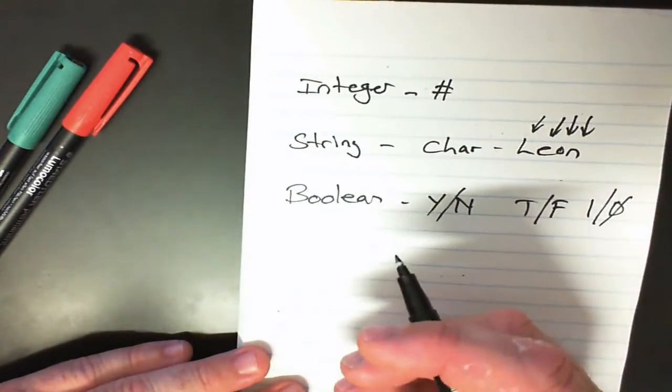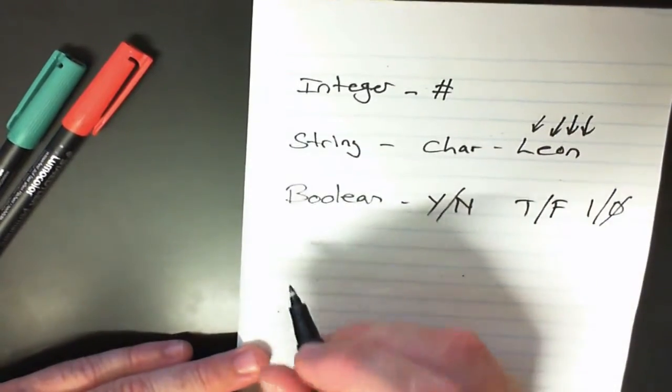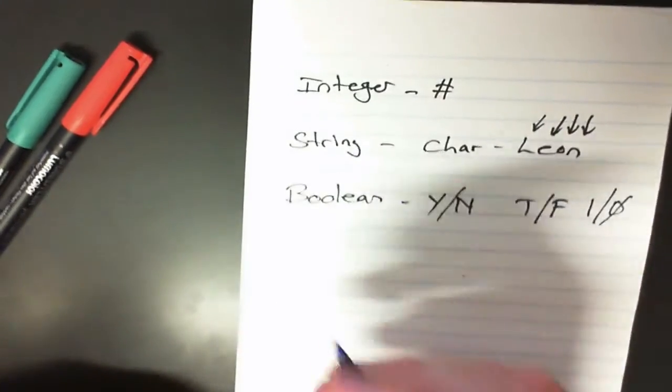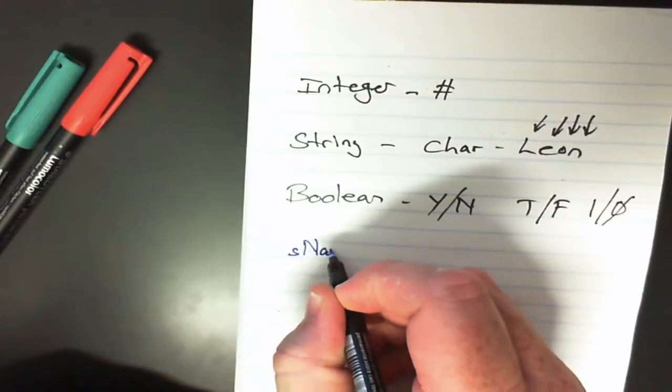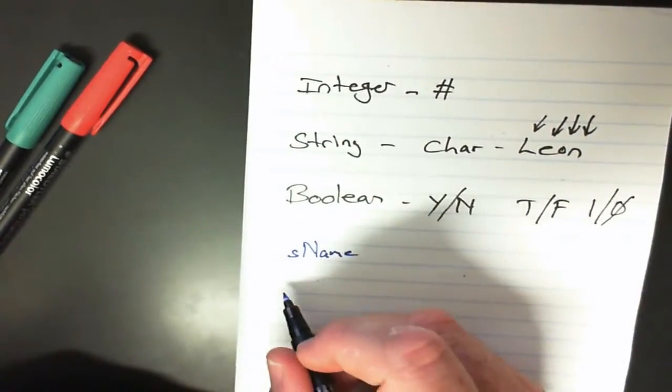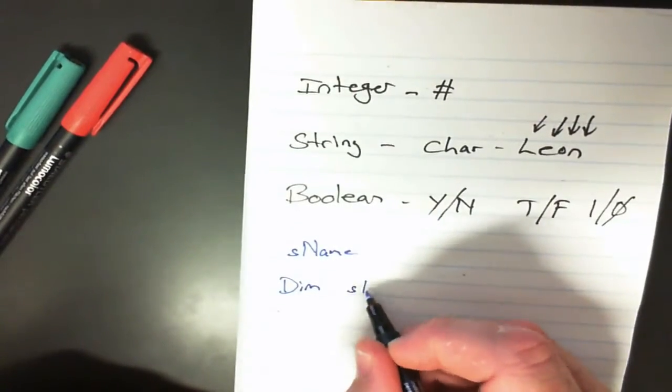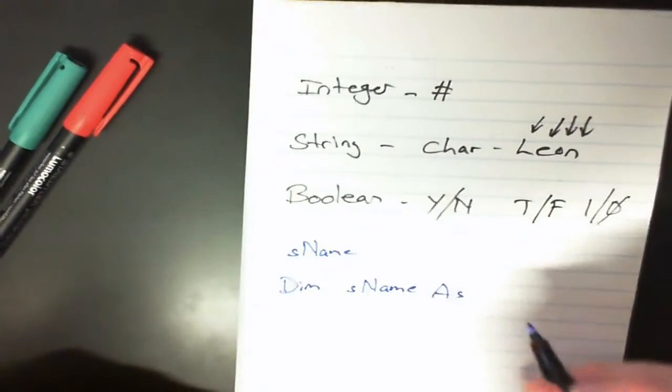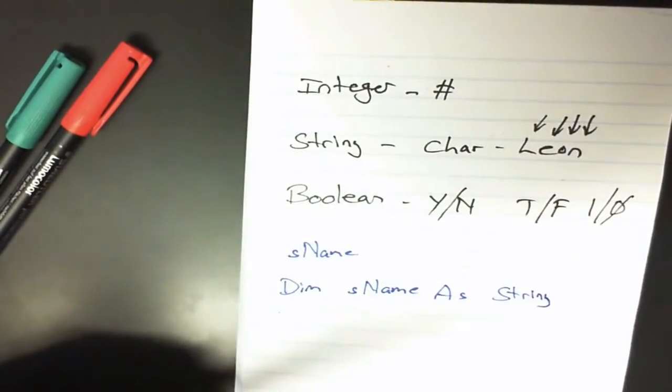And so they're known as the variable type. So when we declare a variable in Visual Basic, we might actually declare sName. And to declare that we go dim sName as string.